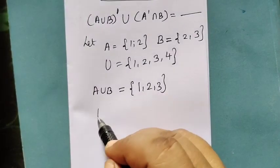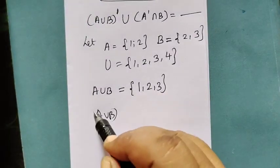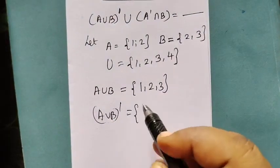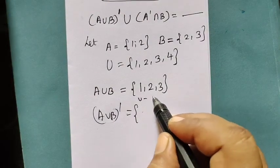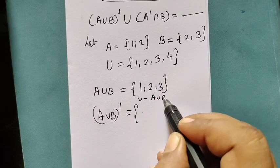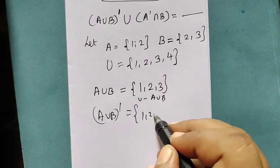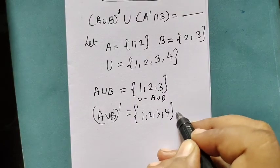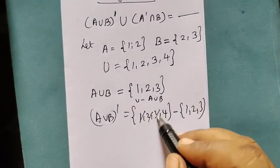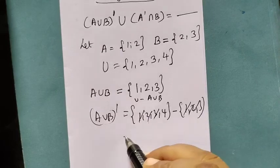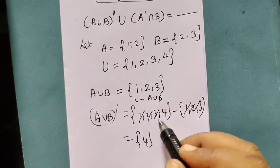Next A union B whole dash. So A union B whole dash equals the formula U minus A union B. U is {1,2,3,4}, then A union B is {1,2,3}. So common down and down and down. What is the union? 4, put it in the box.